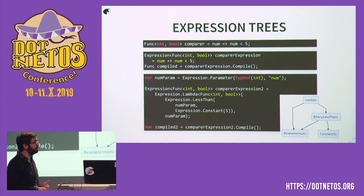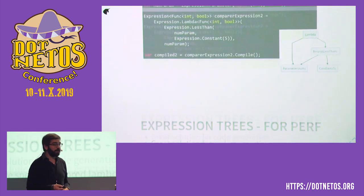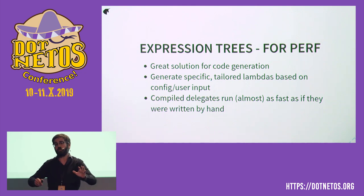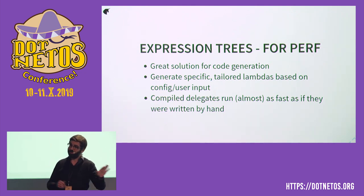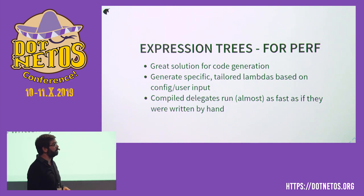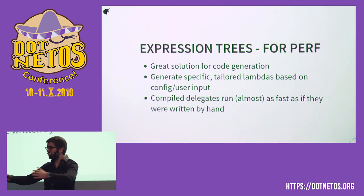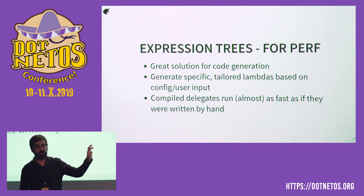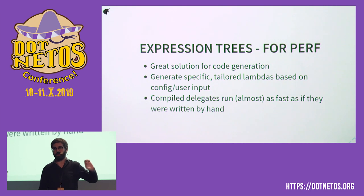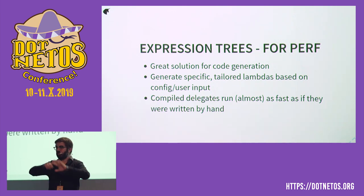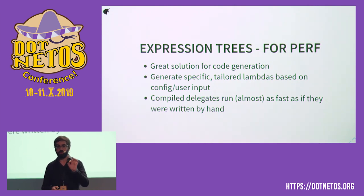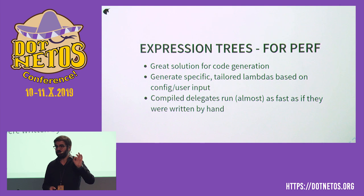What is this good for? Why am I talking about this? This is actually something you can take home and use right away — unlike the rest of my talk about internals, this is actually useful. This is usually used for code generation. Typically, you get some sort of configuration or user input, and you use this API to construct an expression of what you want, the logic, and then compile that thing. At runtime, the compiler will generate that code, which will run almost as efficiently as if you wrote it yourself.